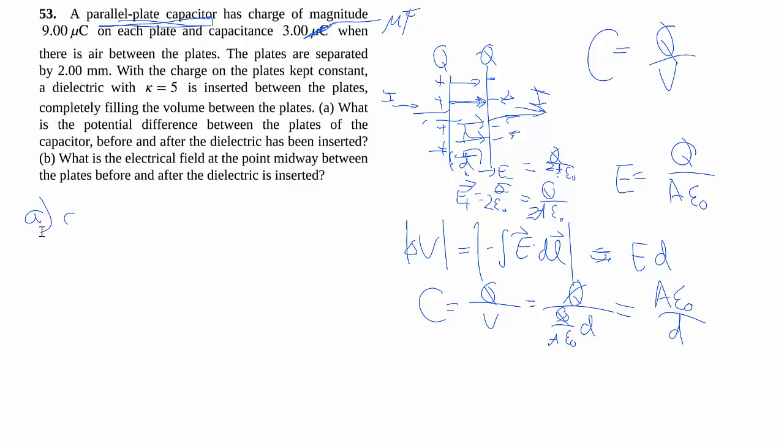So this allows us to answer the very first part of part A, which is before the dielectric is inserted, air gap. In this case, they actually gave us the capacitance, which is nice. So what is the potential difference? We just have to find out V equals Q over C. We got the Q, which is 9 microcoulomb, and we got the C, which is 3 microfarads. It's going to give us 3 volts.